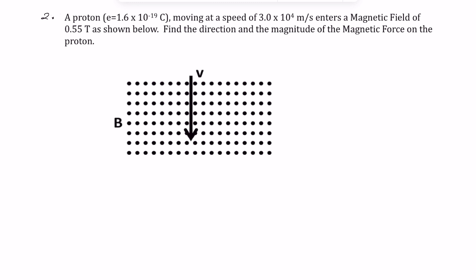So quantities - it's always nice to write down the quantities given to you first. We are given the speed, which is 3.0 times 10 to the 4 meters per second. Then we are given the charge, that is 1.6 times 10 to the minus 19, and it's going to be plus because we're talking about a proton.